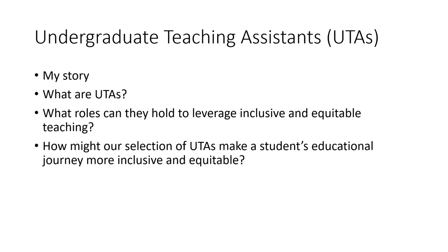For equitable teaching, the visual I keep thinking of is: we want to bring everybody to the table, but it can't end there. Everybody has to have a chair, and everybody has to have a chair that will support and hold them up. We can't bring them to the table and hand them a wobbly chair and expect them to succeed. What could undergraduate teaching assistants do to make sure all of our students have sturdy chairs at the table?